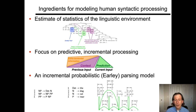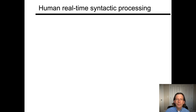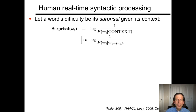We looked at the incremental probabilistic early parsing algorithm, which is an eager algorithm that actively incorporates all available information at any particular moment. The one more ingredient we're going to need to actually link a theory like this to observable behavior is a relationship between properties of a formalized model and things that we can observe. We're going to return to the idea of word surprisal as a crucial part of that linking relationship.